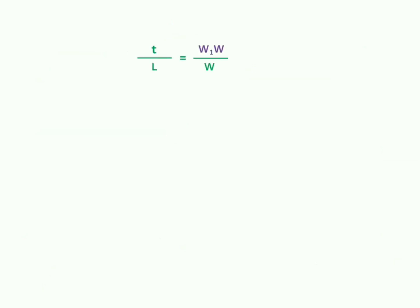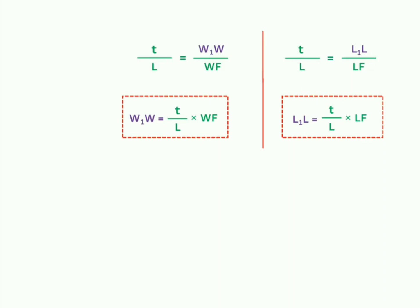For the determination of change in draft aft, we are supposed to simplify this expression for W1W. And similarly, for the determination of change in trim forward, we are supposed to have the value of L1L. So, W1W can be expressed as t upon L into WF and L1L equals t upon L into LF. I hope, just by looking at the presentation, it is quite understandable how it comes like that. You should remember these two expressions and they are going to help you in the determination of change in trim aft and forward.